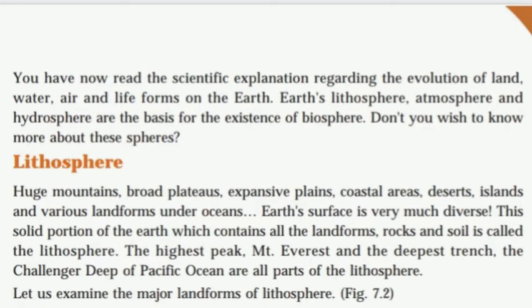What is the lithosphere? Huge mountains, broad plateaus, expansive plains, coastal areas, deserts, islands, and various landforms under oceans — earth's surface is very much diverse. This solid portion of the earth which contains all the landforms, rocks and soil is called the lithosphere. The highest peak, Mount Everest, and the deepest trench, the Challenger Deep of Pacific Ocean, are all parts of the lithosphere.